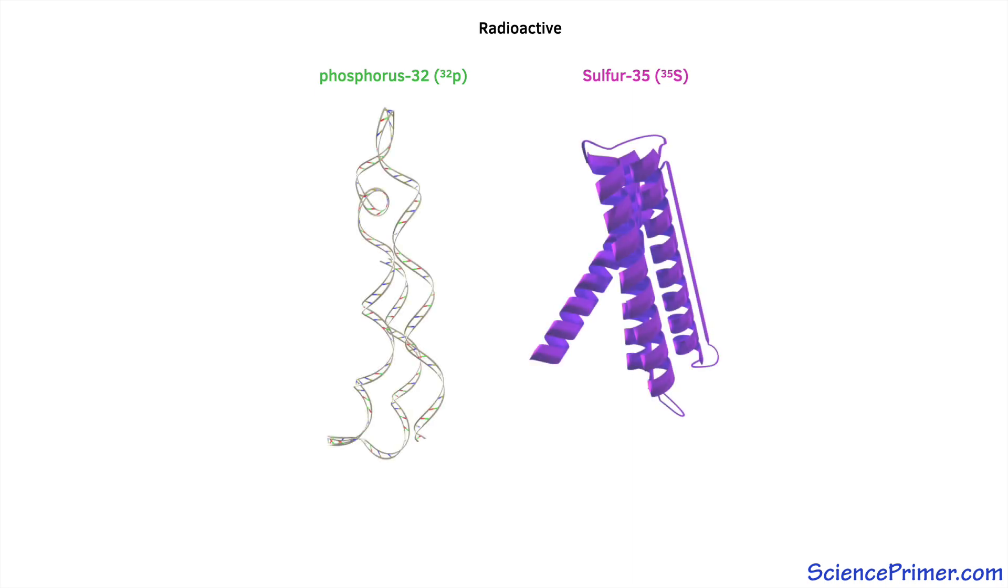The innovation that Hershey and Chase added to the study of phage was the use of radioactive isotopes of phosphorus and sulfur to separately label all of the DNA and protein in the phage. Isotopes of these two elements were chosen because the nucleotide building blocks of DNA are held together by a sugar phosphate chain, so they have a high concentration of phosphorus but contain no sulfur. In contrast, none of the common amino acids contain phosphorus, while two of them, methionine and cysteine, contain sulfur.